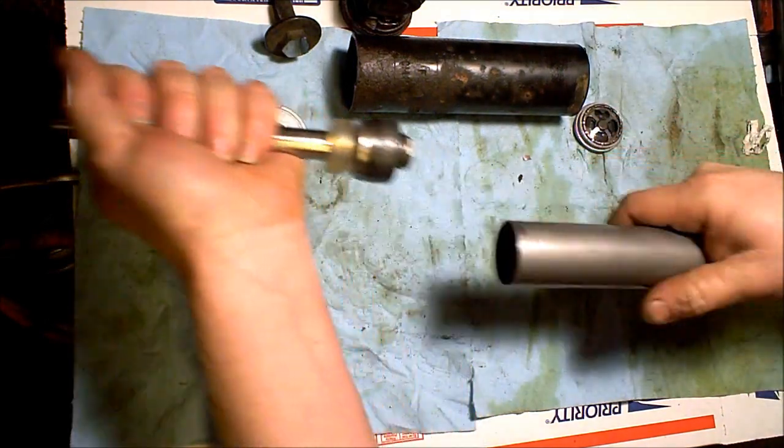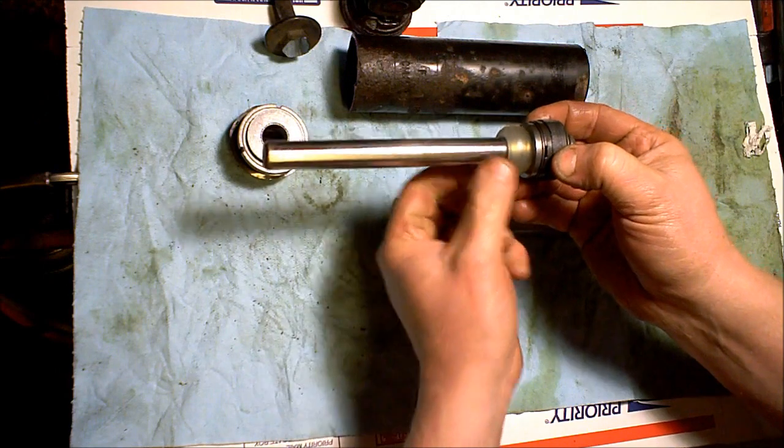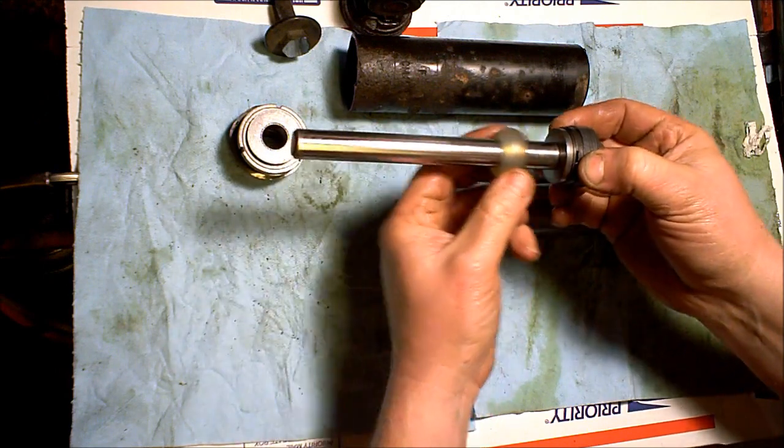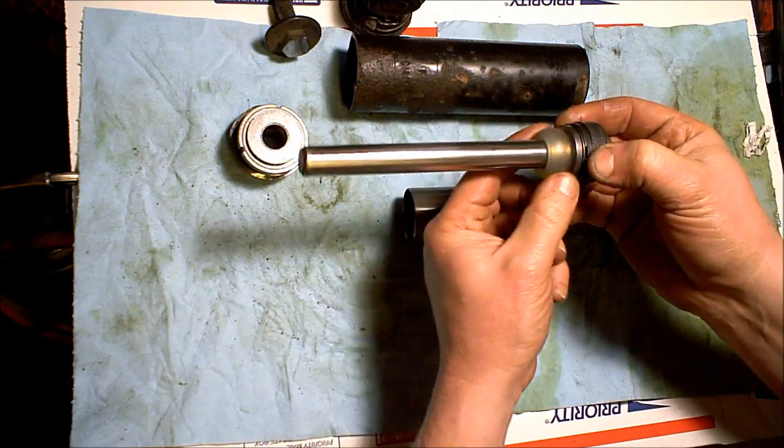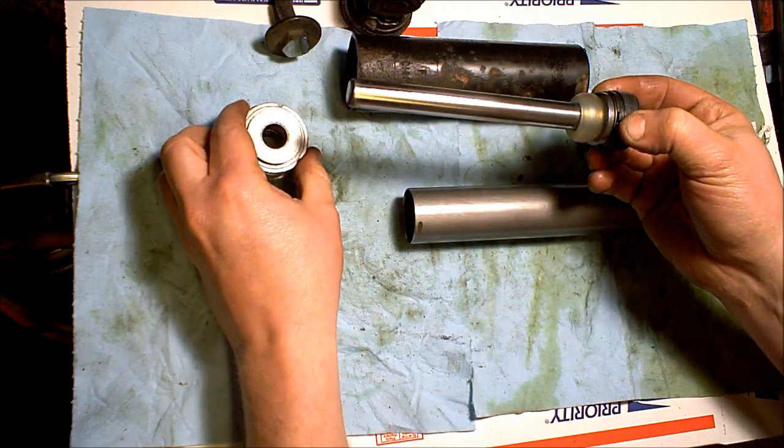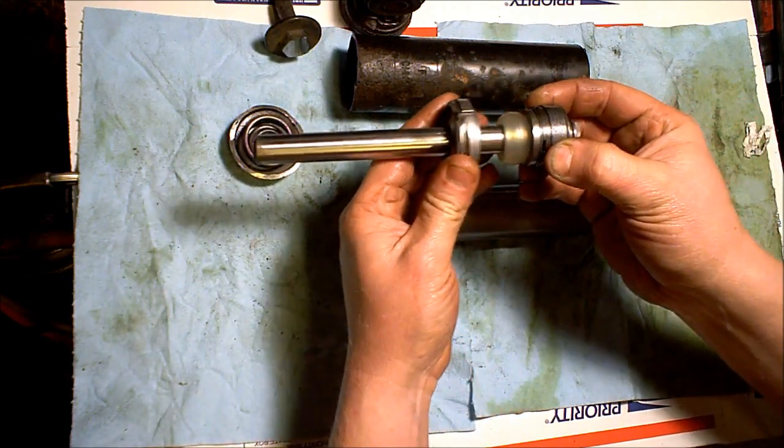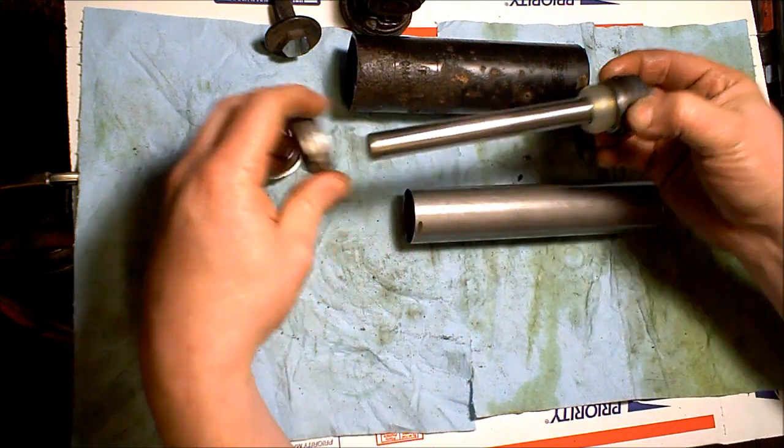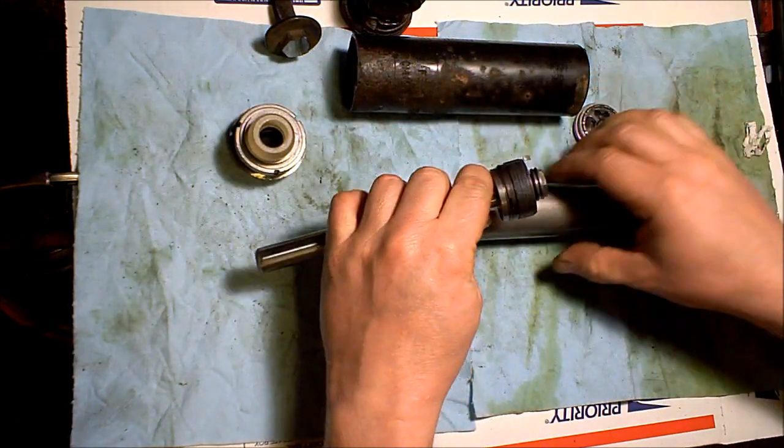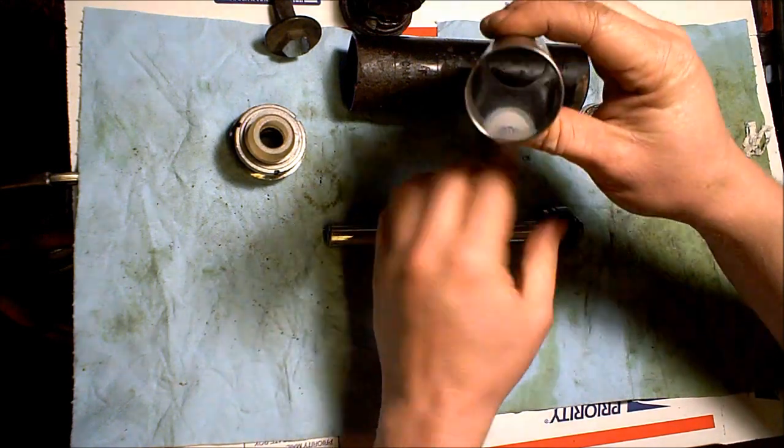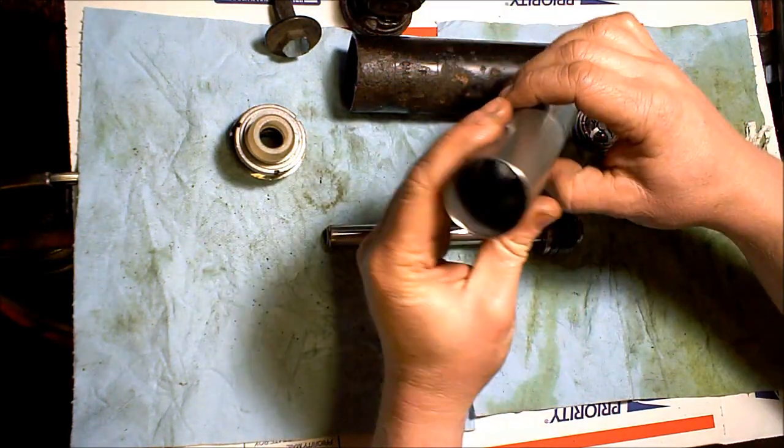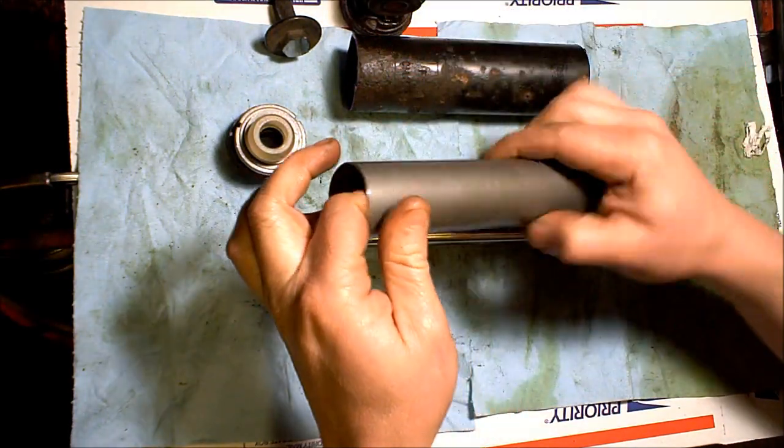And then inside here, you have your main valving and your shock rod. Here is a little plastic damper that I believe just dampens the effect of the shock coming up and hitting. And in here is all your valving and this is just a nice hollow tube that's nice and machined inside.